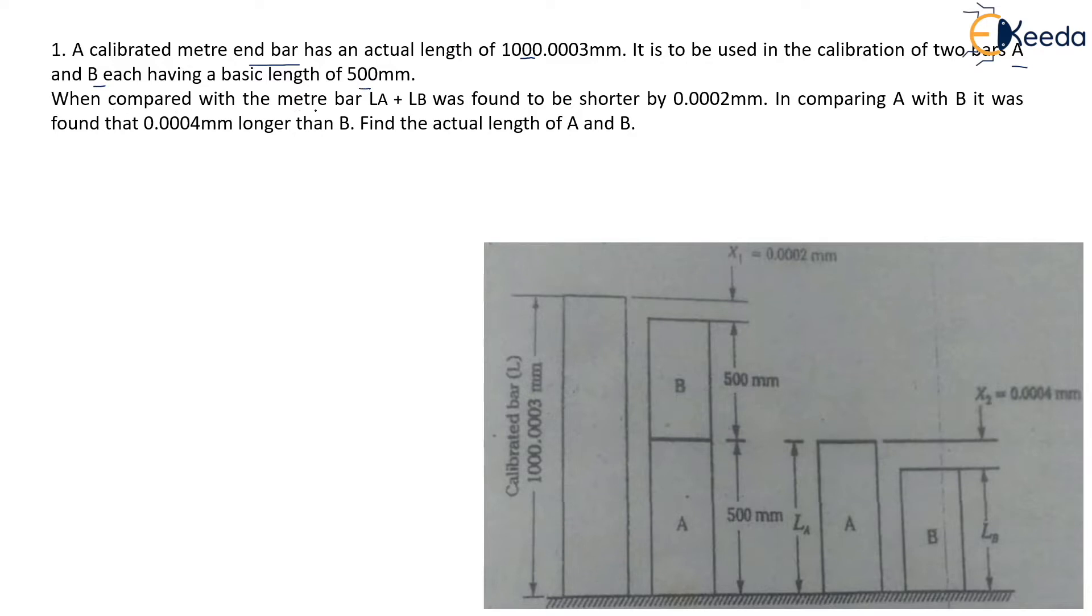When compared with the meter bar LA plus LB, see here in this figure we can see that LA plus LB each has 500 mm length and the difference with this meter bar is given as x1 that is 0.0002 mm.